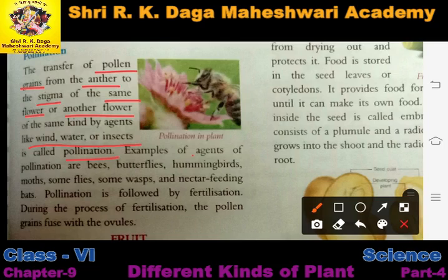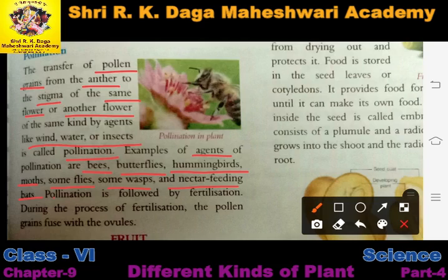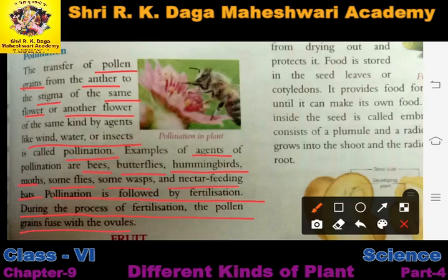Examples of agents of pollination include bees, butterflies, hummingbirds, moths, some flies, some wasps, and nectar-feeding bats. All these are kinds of agents which transfer pollen grains during pollination. Pollination is followed by fertilization. During the process of fertilization, the pollen grains fuse with the ovules.